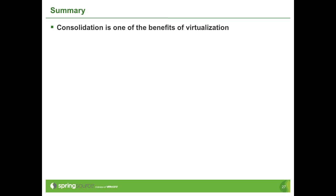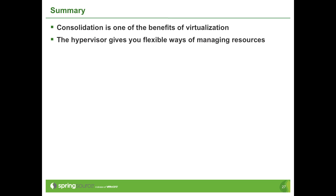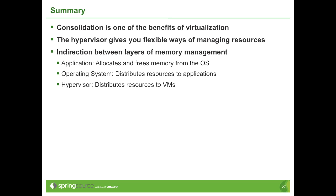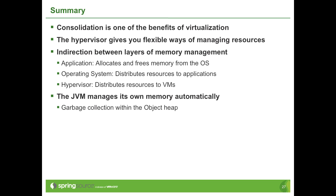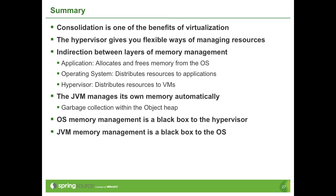To summarize: consolidating physical computers into virtual machines provides more flexible administration, more efficient use of hardware, and the ability to arbitrarily create boundaries around computing resources. We've learned about the layers of memory management between applications, operating systems, and the hypervisor, and how Java manages memory in the JVM. We've shown how memory management inside an OS is a black box to the hypervisor, and how the JVM is a black box to the OS in exactly the same way. In the next presentation, we'll examine the techniques the hypervisor uses to reclaim memory from virtual machines.